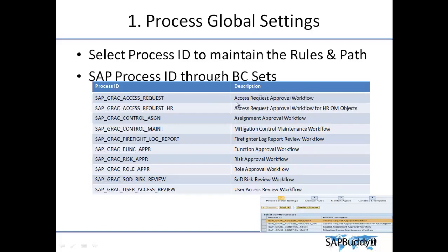Whenever we create an access request, this process ID triggers all the approval process, notifications, and related workflows. The next one is an access request for HR OM object. In HR, we need to assign the Organizational Management object to the respective users using structural authorization — for example, transaction code OOSB. We can also use access request management to request the OM object assignment, and the workflow and approval process for this task will be defined in this process ID.